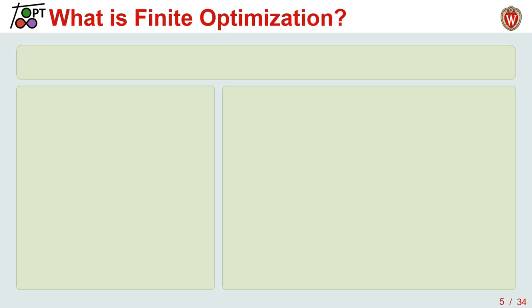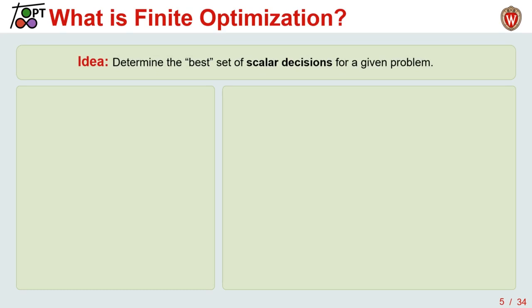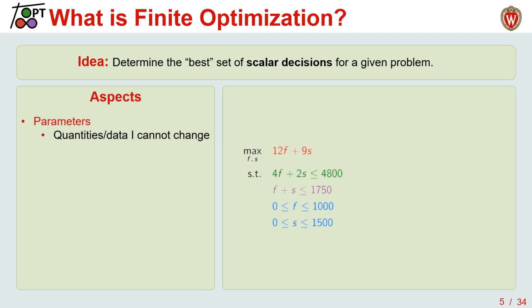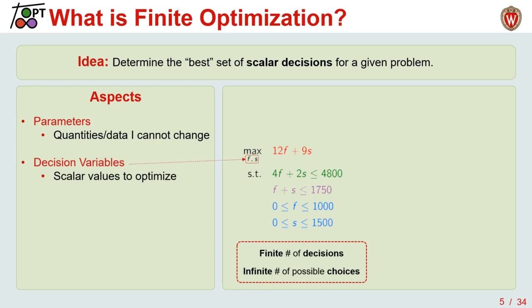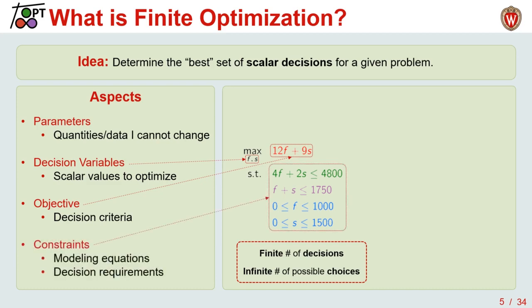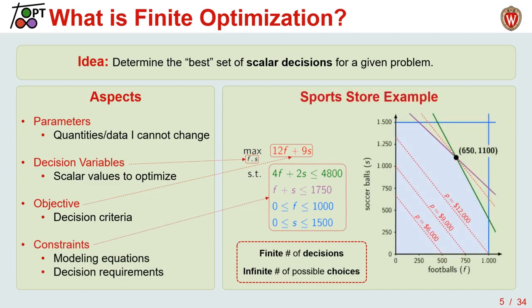What is finite optimization? It's an optimization problem in which we have to make scalar decisions. These problems can entail parameters — quantities of data we can't change, like fixed numbers in a formulation — and decision variables, which are the scalar entities we need to choose. We have a finite number of these, even though the space of possible decisions might be infinite. The objective function characterizes the best solution, and constraints entail the restrictions and modeling concerns of the problem. These problems can generally be depicted graphically in terms of the dimensions of the decisions.